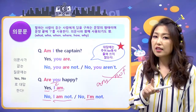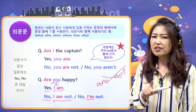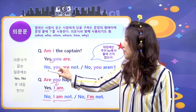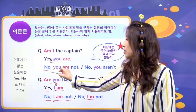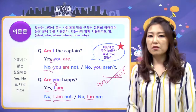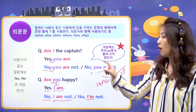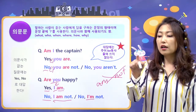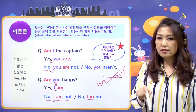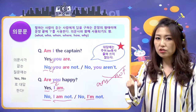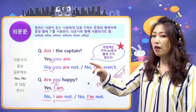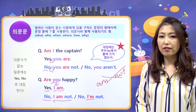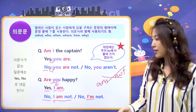대답을 할 때는 yes, no 다음에 반드시 comma를 찍어줘야 돼요. 그래야 yes 한 박자 쉬고 'you are', 'I am' 이렇게 답하는 게 되는 거예요.